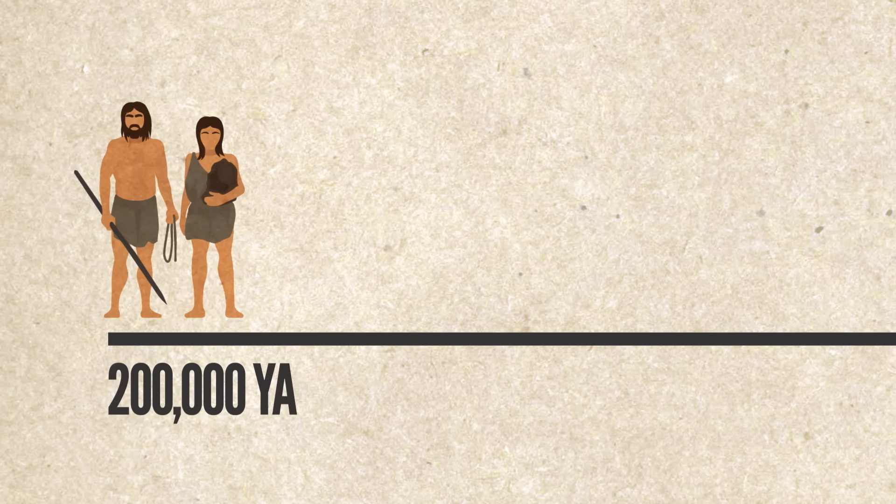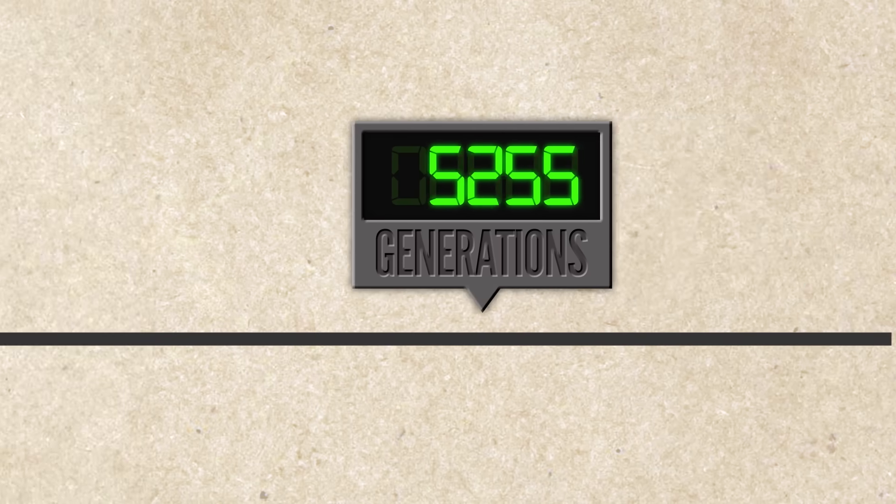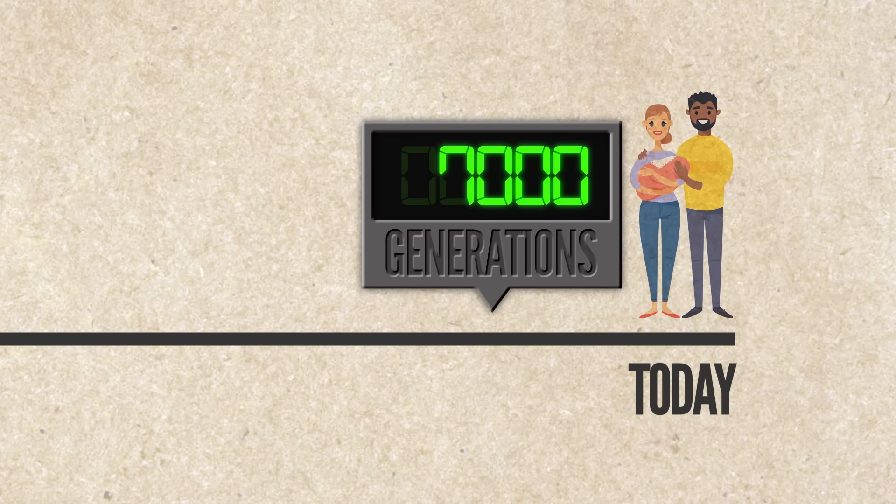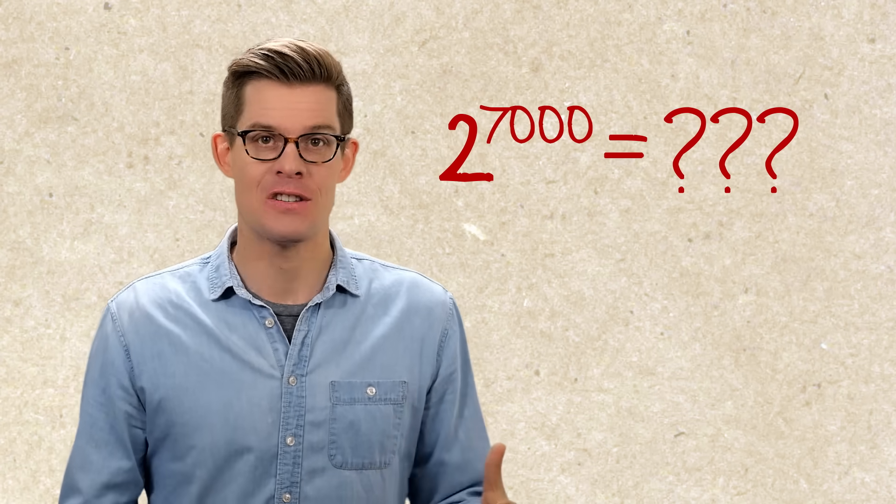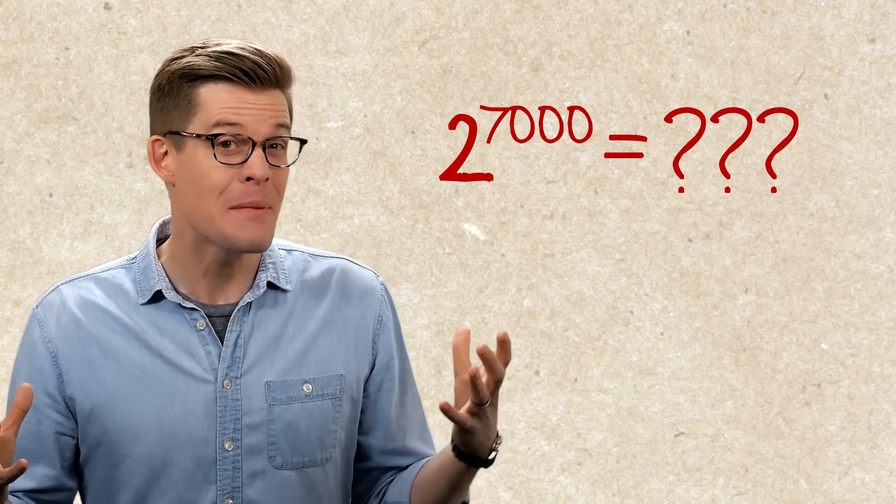Since our species came on the scene 200,000 years ago, there have been maybe 7,000 or 8,000 generations of humans leading up to you. So where are all your missing ancestors? Clearly there's been some inbreeding.